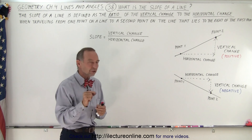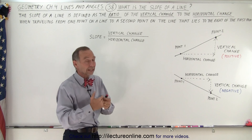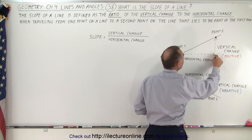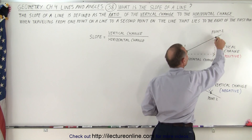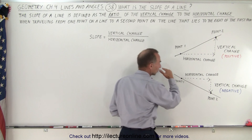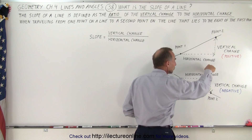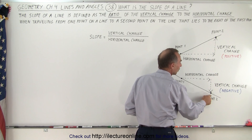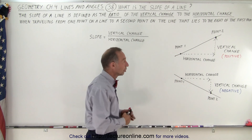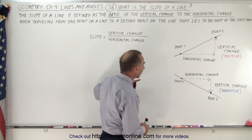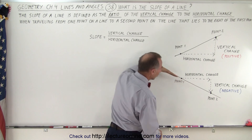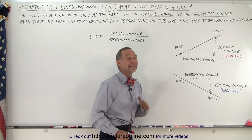But the change in the vertical direction can either be positive or negative. If the line is sloped upward, we must go upward to reach the second point, so our vertical change is a positive change. But if our line is sloped downward, then we must go down to get to the second point — in the vertical direction we call that a negative change. So a line that slopes upward has a positive slope, and a line that slopes downward has a negative slope.